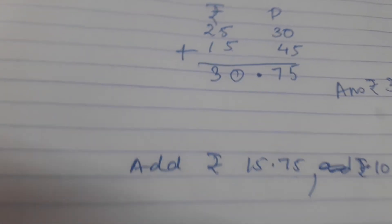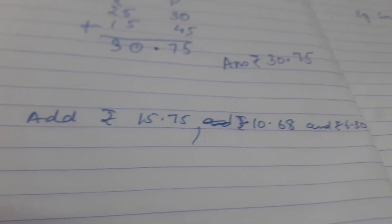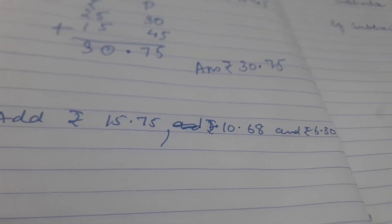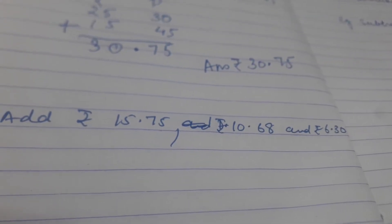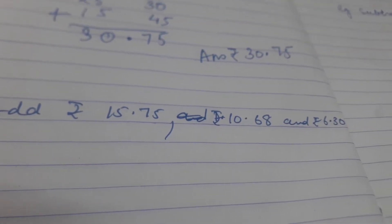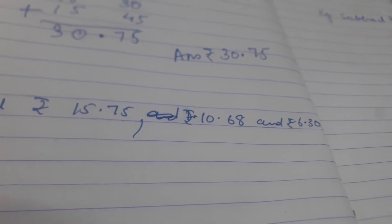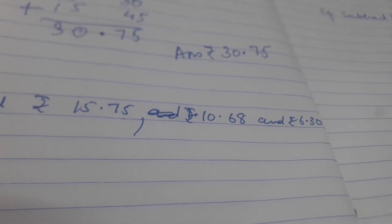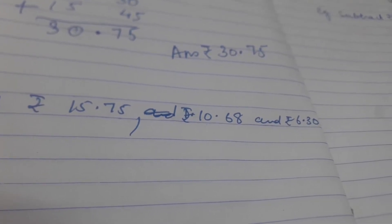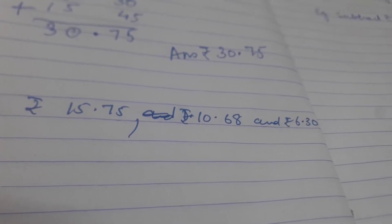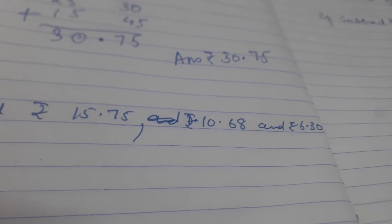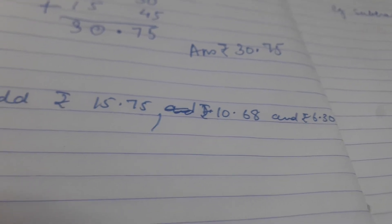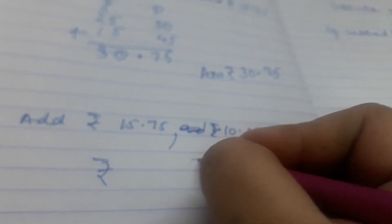Now let us take another example. You have to add Rs. 15, 75 paise, Rs. 10, 68 paise, and Rs. 6, 30 paise. So again you will make a column of Rs. and a column of paise.